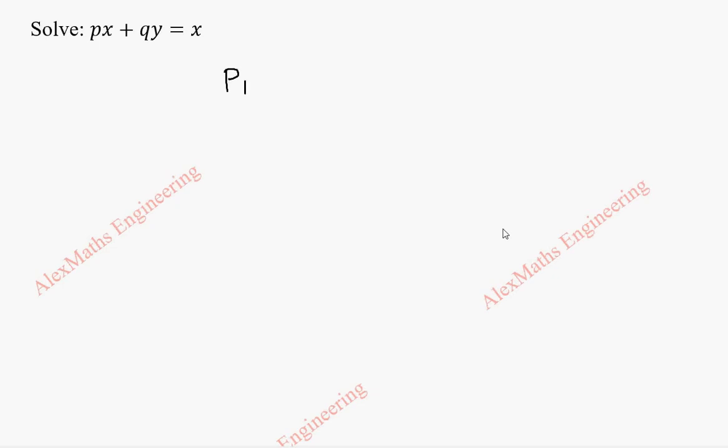This is of the form capital P into small p plus capital Q into small q equal to R. Now rewriting this equation, we get x into p plus y into q equal to x.